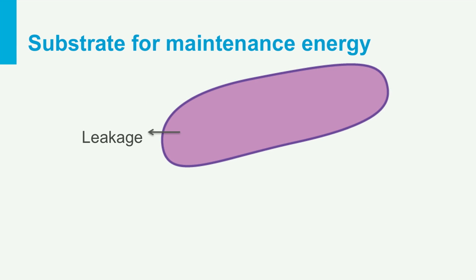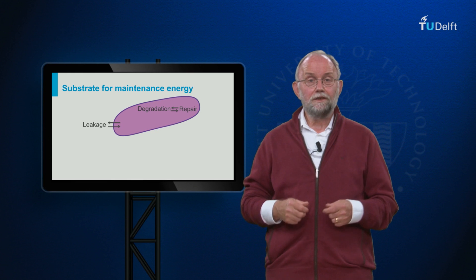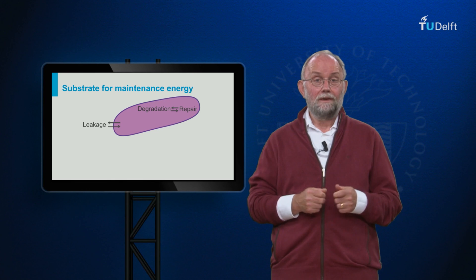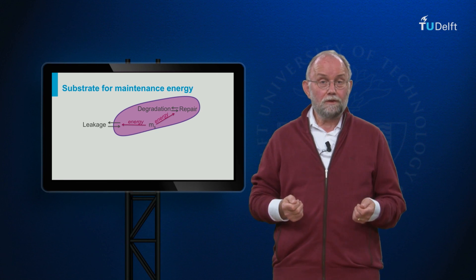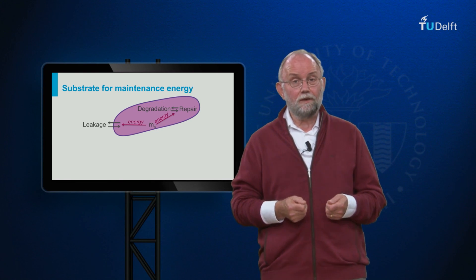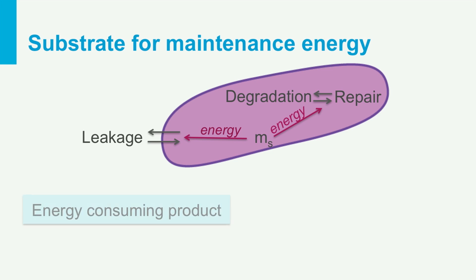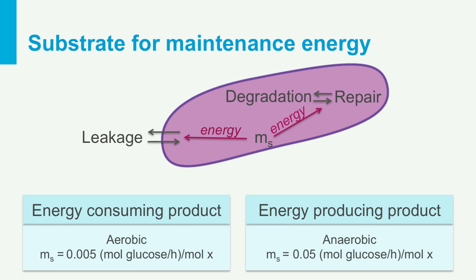All microorganisms have to maintain their structural integrity against constant leakage of molecules over membranes and degradation of cellular polymers. To counteract these degrading processes, like pumping out leaked molecules and repair of degraded molecules, cells must spend energy at a continuous rate, which requires substrate catabolism at a maintenance rate MS. Also important is that aerobic MS values are about a factor of 10 lower than anaerobic MS values, because energy produced per mole glucose is aerobically roughly 10-fold higher than anaerobically.